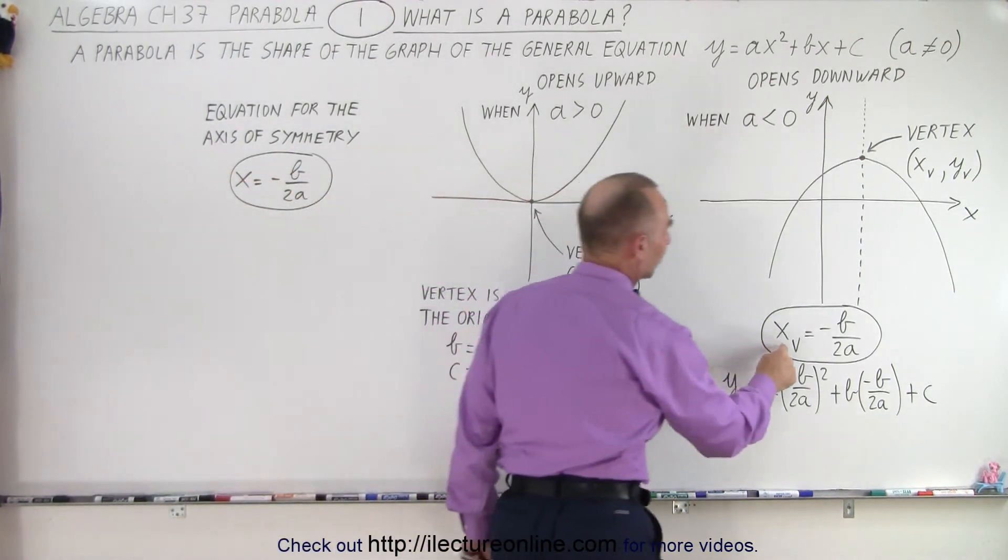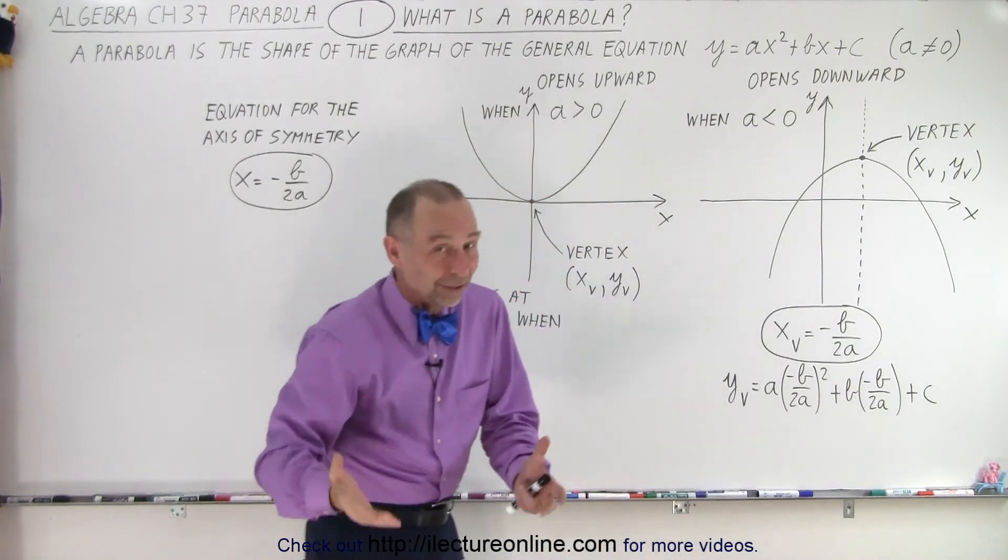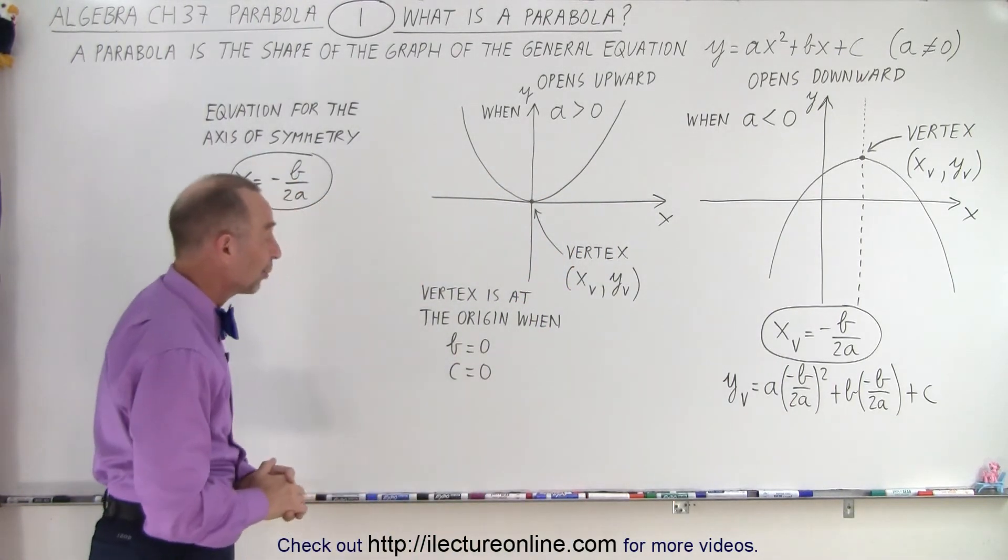For the particular value of the vertex for x, we have minus b over 2a, of course, because it has to be on the axis of symmetry. That makes sense when you think about it.